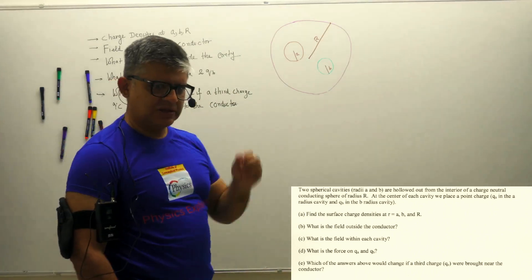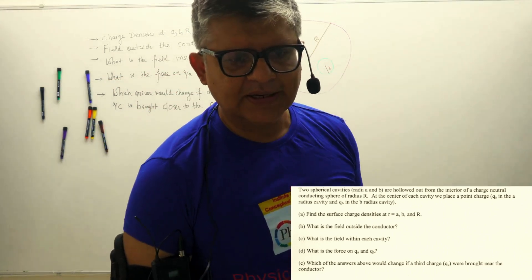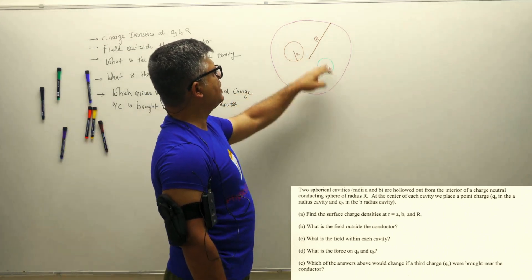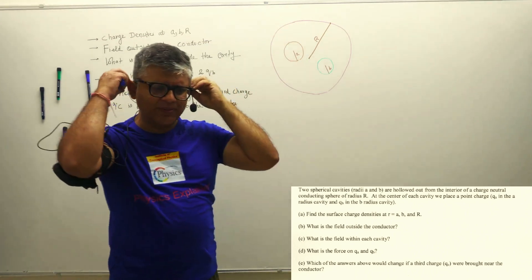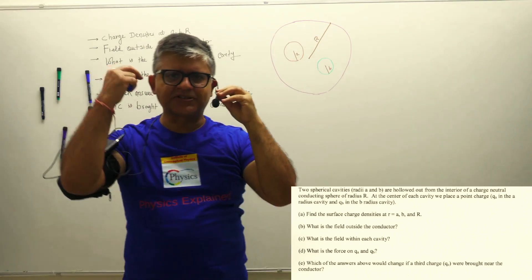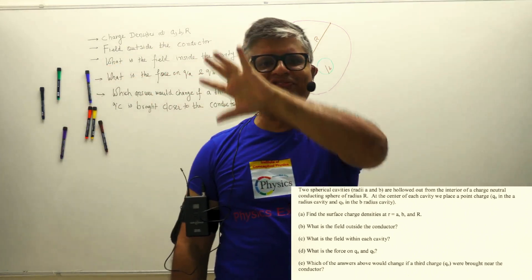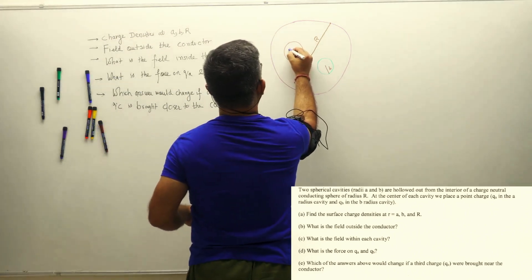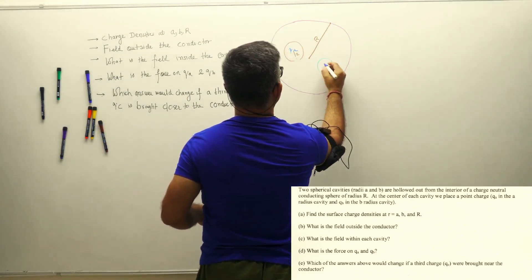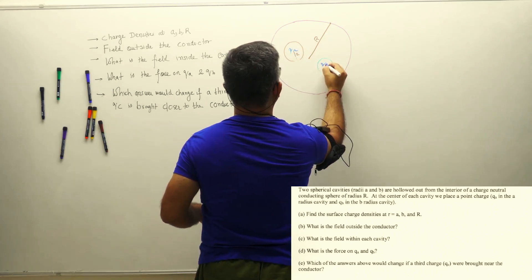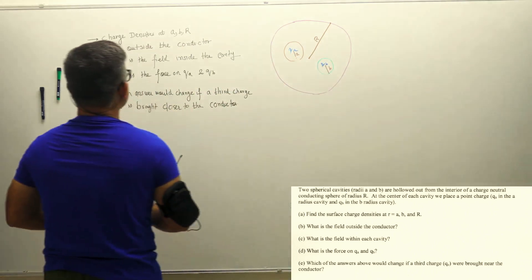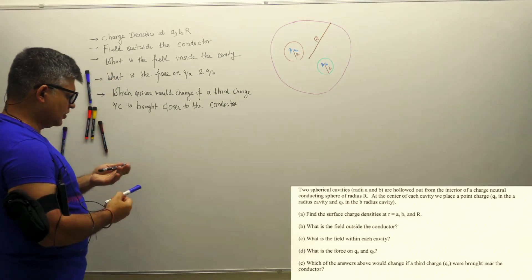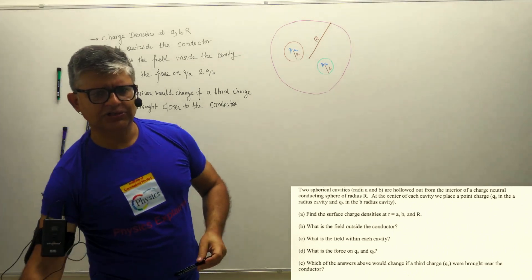Let's read the first question: what are the surface charge densities on A, B, and R? So let's say I keep a charge QA at the center of cavity A and a charge QB at the center of cavity B, and it is given that these charges are positive.